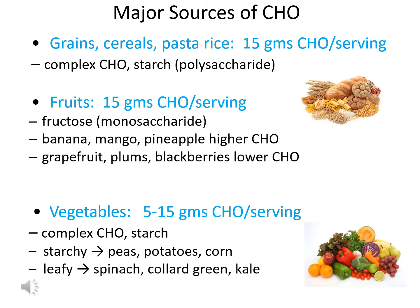We know that dietary carbohydrate is important, so what foods can we select to provide us with this essential nutrient? There are various major sources of carbohydrate. The first group includes grains, cereals, pasta, rice, and bread — they're going to give you about 15 grams of carbohydrate per serving. They consist of complex carbohydrates, usually in the form of starch, so they're going to require more digestion than a simple carbohydrate would.